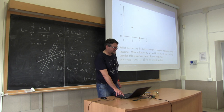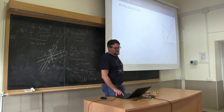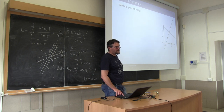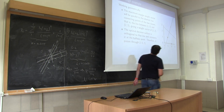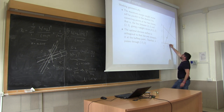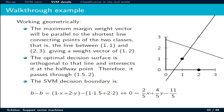Here is a very simple exercise. You have three points. You compute the line connecting the two closest points of the two classes, and then from this line you can compute the hyperplane. So basically this hyperplane must pass through the point 1.5, 2, and thus if you solve it, it gives you the plane: 2/5 times x plus 4/5 times y minus 11/5. This is very straightforward.